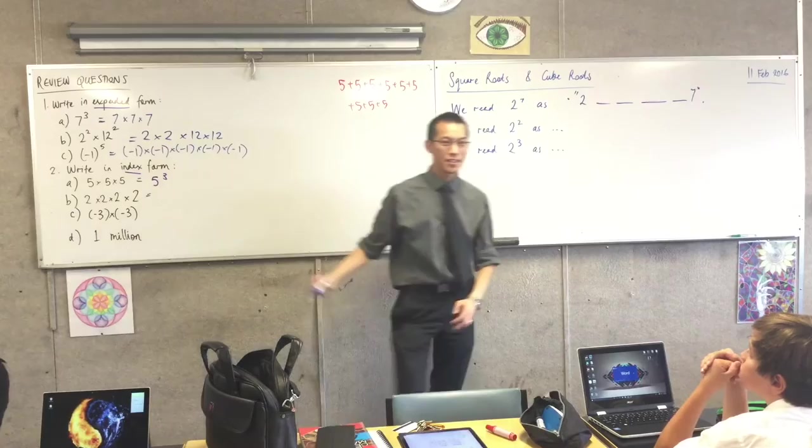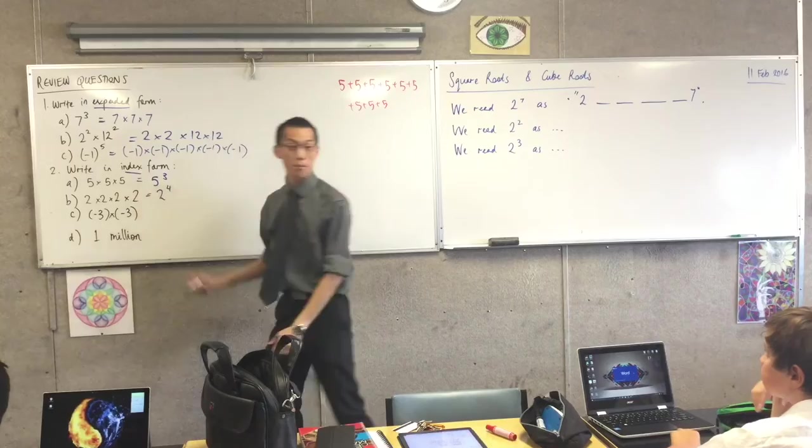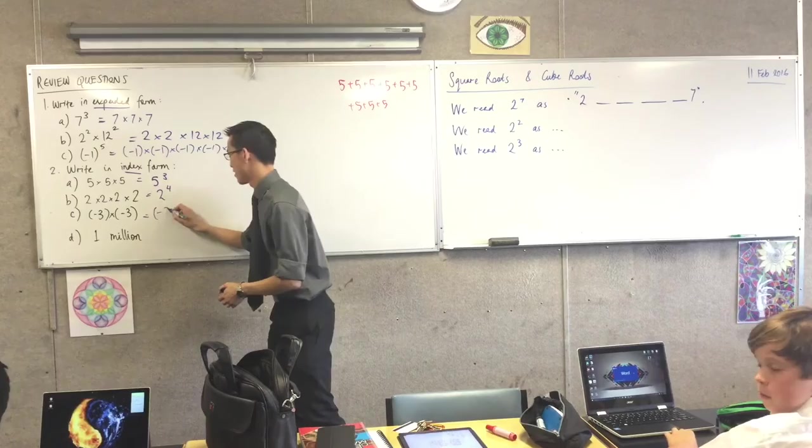Someone hasn't offered an answer yet. The next one. Yeah, go ahead. Two to the power of four. Two to the power of four. Perfect. Okay. This one here. Yeah, Maria. Minus three to the power of two. Very good. Minus three to the power of two.